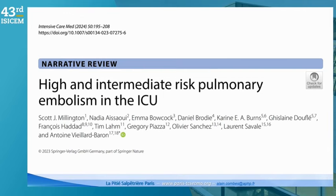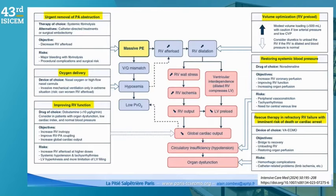The third paper you should have in your bibliography was published in Intensive Care Medicine just a few weeks ago. It is a beautiful review paper on high-risk and intermediate-risk PE in the ICU, with the latest information and a beautiful algorithm about management. This is the main figure of that paper, which summarizes what you should do in severe pulmonary embolism.